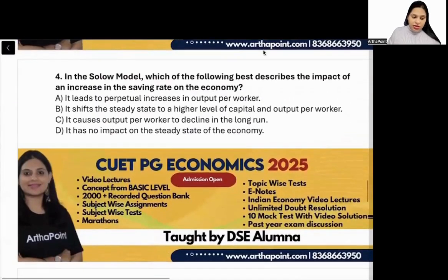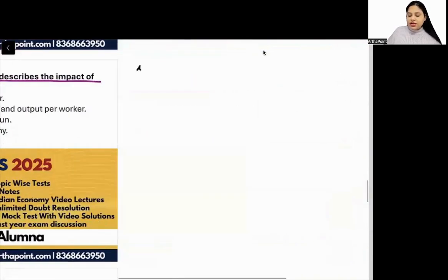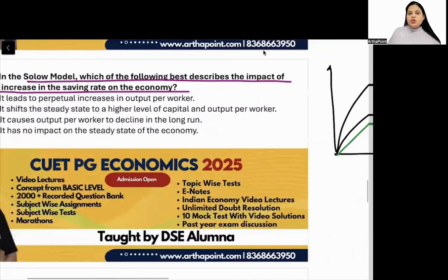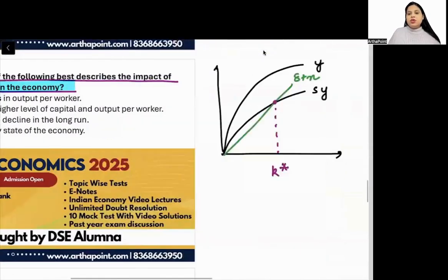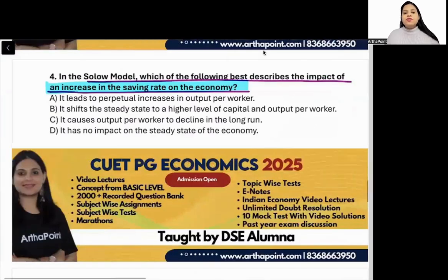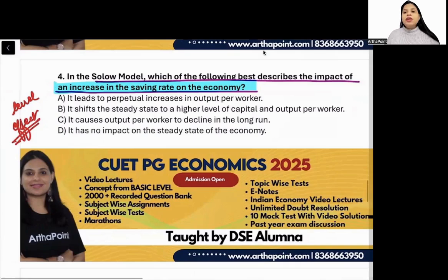Next question: in the Solow model, which of the following best describes the impact of an increase in the savings rate on the economy? Looking at the graph with y, s times y, and delta plus n — we get our equilibrium at the steady state. When the savings rate increases, small k — capital per worker — will increase. It will increase the capital per worker level. There will be a level effect, but not any growth effect.